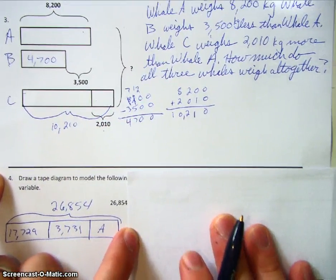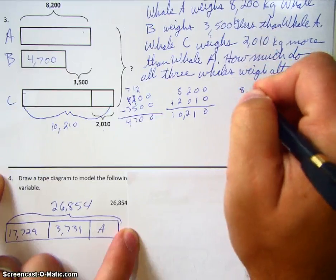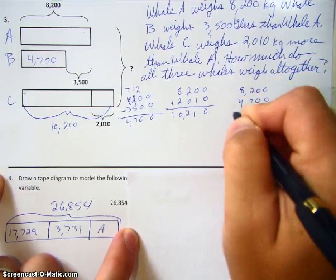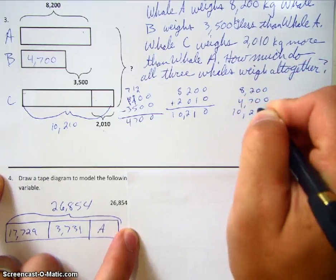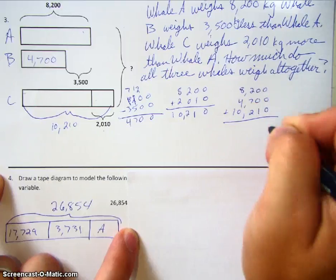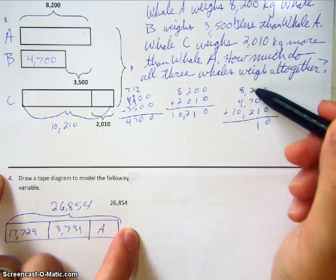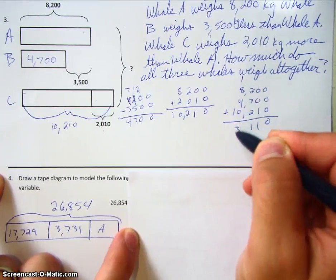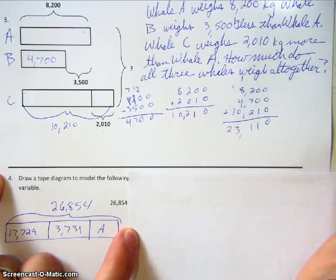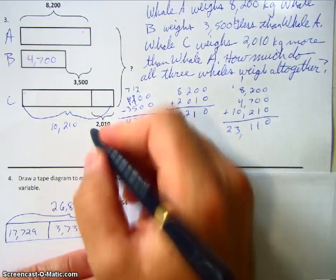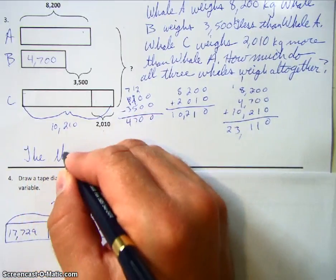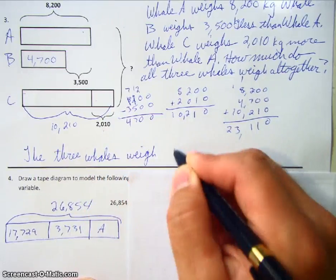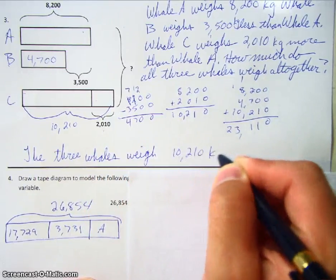Now we need to add up all three. Whale A is 8,200, whale B is 4,700, and whale C is 10,210. Going to add these up: 2 plus 7 is 9, plus 2 is 11. Then 1 plus 8 is 9, plus 4 is 13. We get a total of 23,110 kilograms. So the three whales weigh 23,110 kilograms altogether.